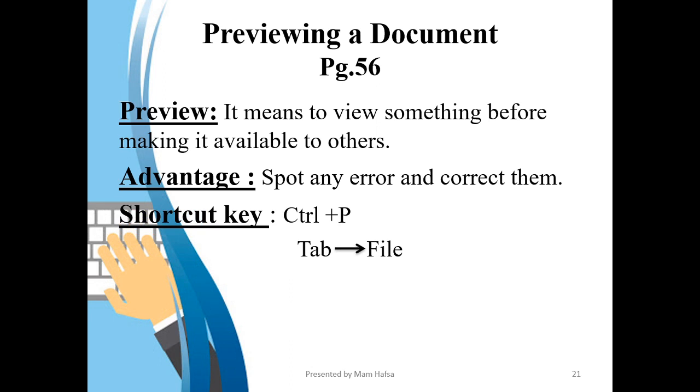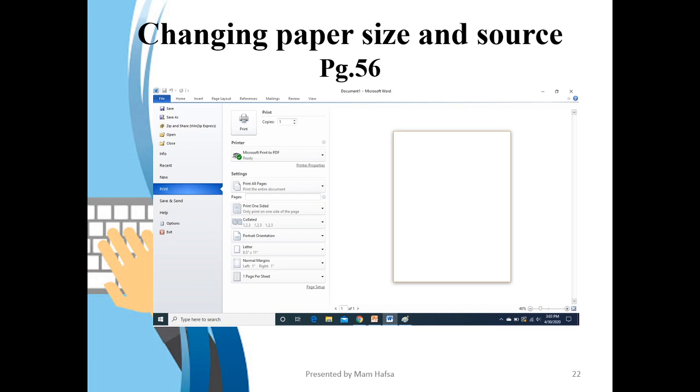Then changing paper size and source which is again on page 54. The default paper size is A4. Paper size should be same as the paper present in your printer, for example legal, letter, A6, etc. You have to click on source to select which printer you would like to use and you can also change the number of copies. For example, if you need 10 copies of the page you may write 10 over there to get 10 copies. So these are the settings for printing a page.